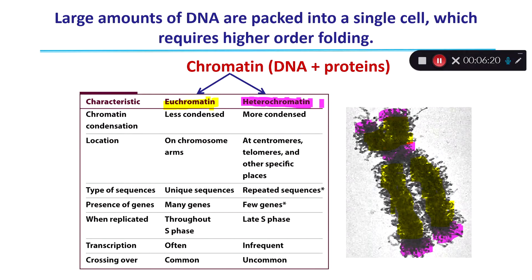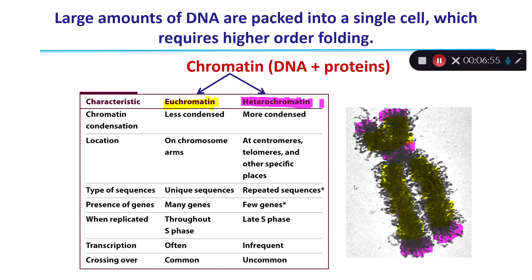Heterochromatin, shown in pink at the ends and very center of the chromosome, is far more condensed — in fact, it's very unlikely to ever be completely decondensed. We only see this at the centromeres or at the telomeres, and heterochromatin is more of a structural type of DNA as opposed to a functional type. The types of sequences found here are repetitive DNA — like AT, AT, AT over and over, or CAG, CAG, CAG repeating — and there are very few protein-coding genes within these regions, so it is very infrequently transcribed into RNA, if at all.